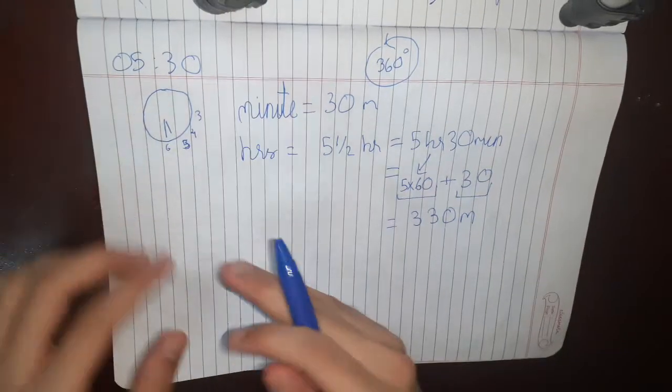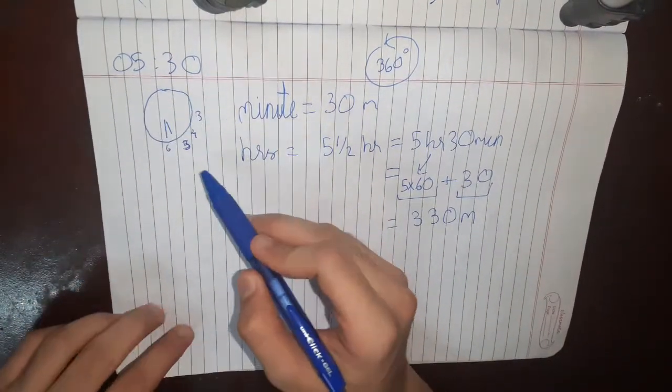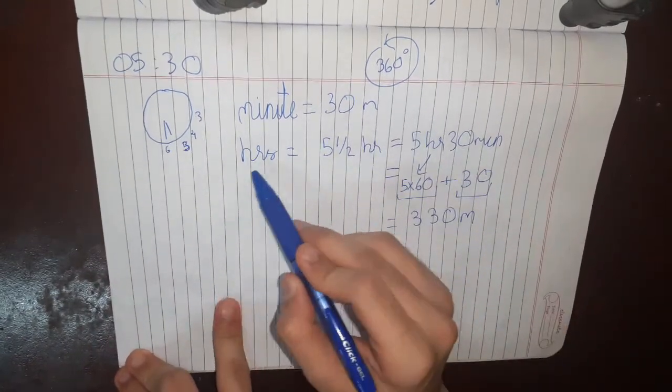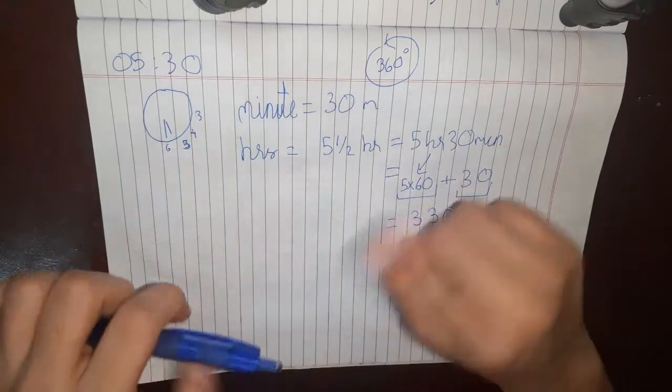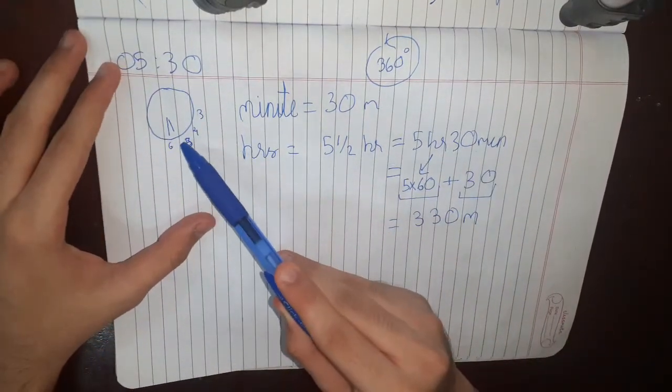Now let us look at the time 5:30. At 5:30 the minute hand is at 30 minutes. The hour's hand is not at 5. See, the hour's hand will be between 5 and 6.